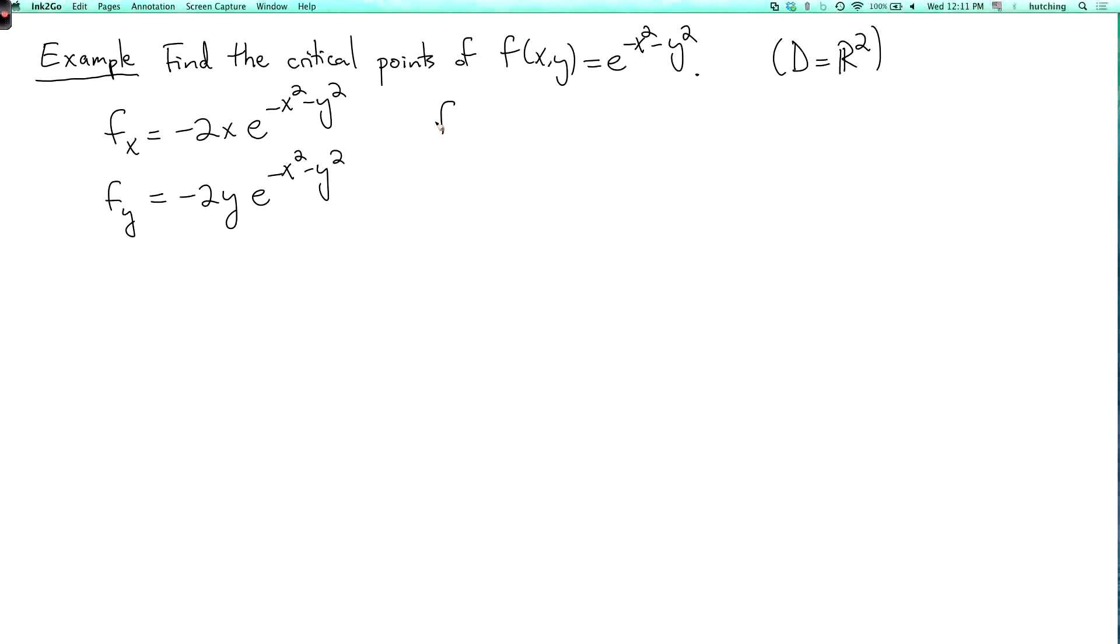So fx is zero if and only if x is equal to zero, because the exponential function never vanishes. And likewise, fy is equal to zero if and only if y is equal to zero. So there's one critical point, which is the origin.